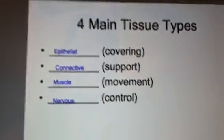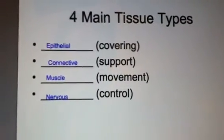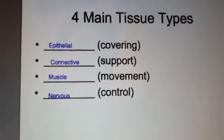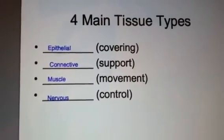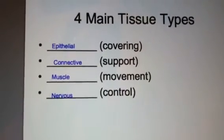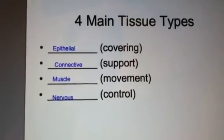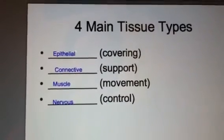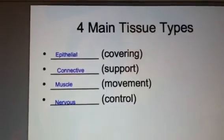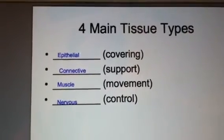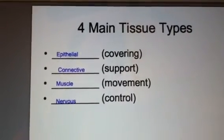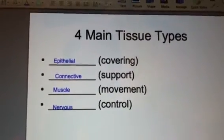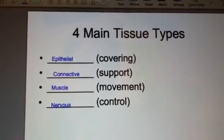These are the blanks you'll want to fill in for your notes. The four main tissue types are: epithelial — which is like skin, for example — connective, muscle, and nervous tissue. And that concludes slides one through six.